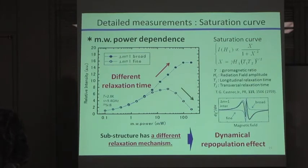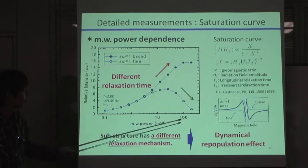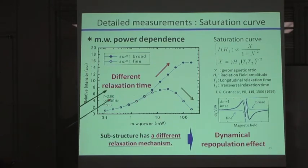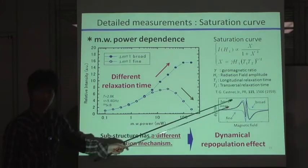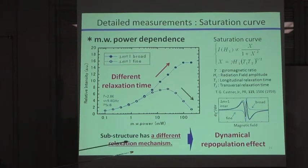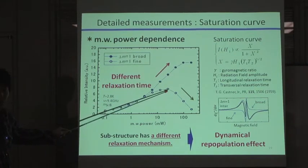And as a second measurement, I measured microwave power dependence. In this figure, the x-axis indicates microwave power in milliwatts, and the y-axis indicates the relative intensity of these two absorption lines. From this figure, you can see clear deviation between these two saturation curves.